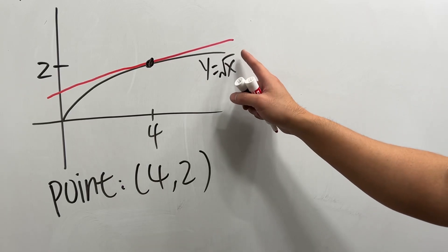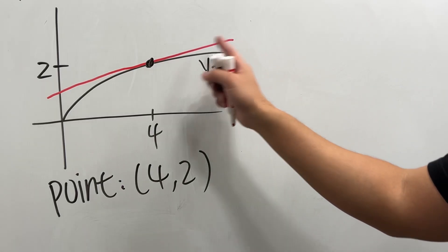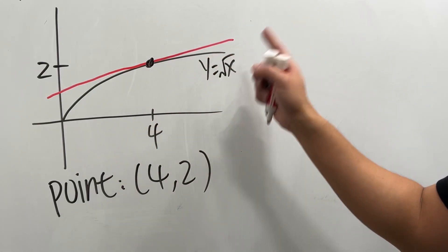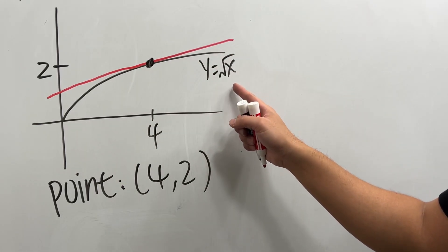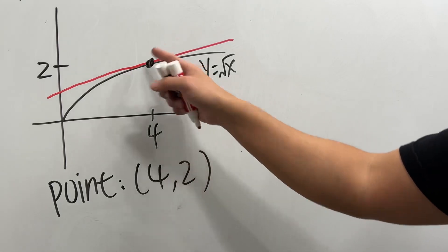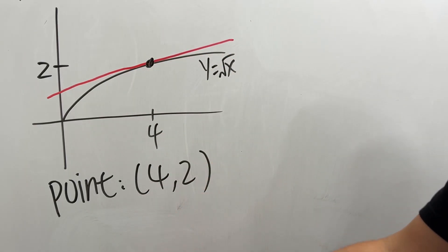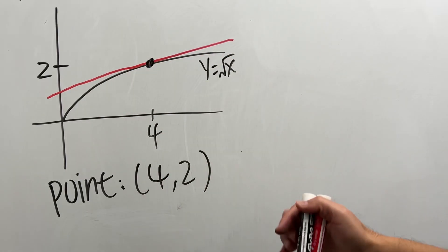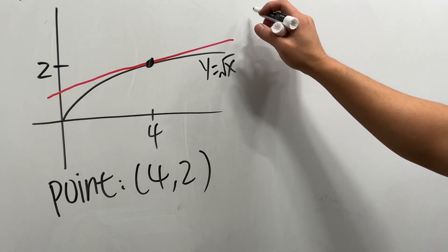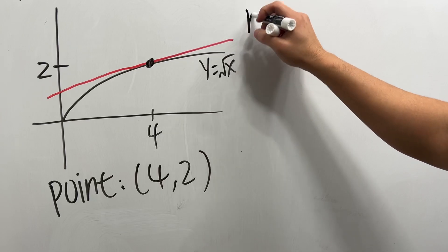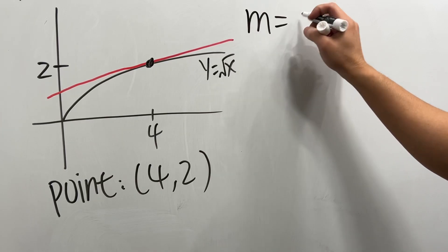How do we find the equation of the line tangent to square root of x at (4, 2)? We have the point already, and the slope is just the derivative.